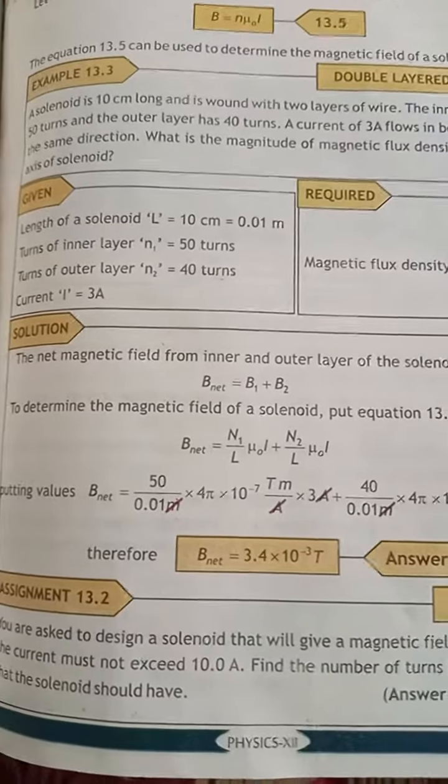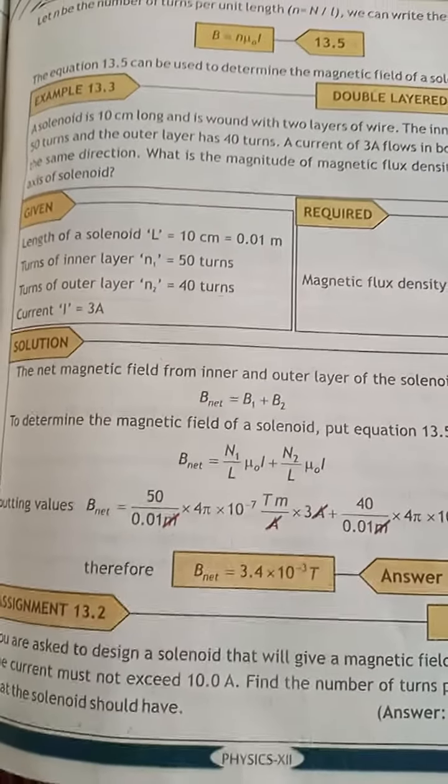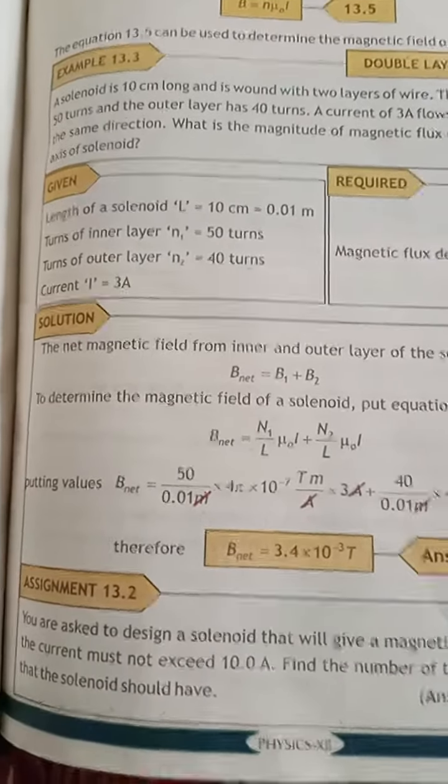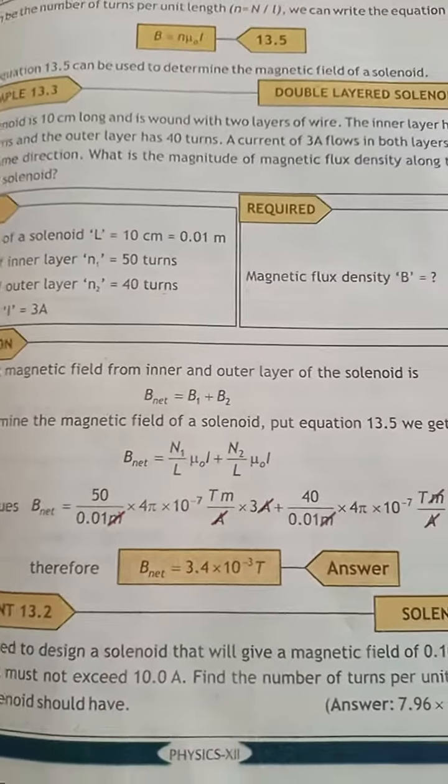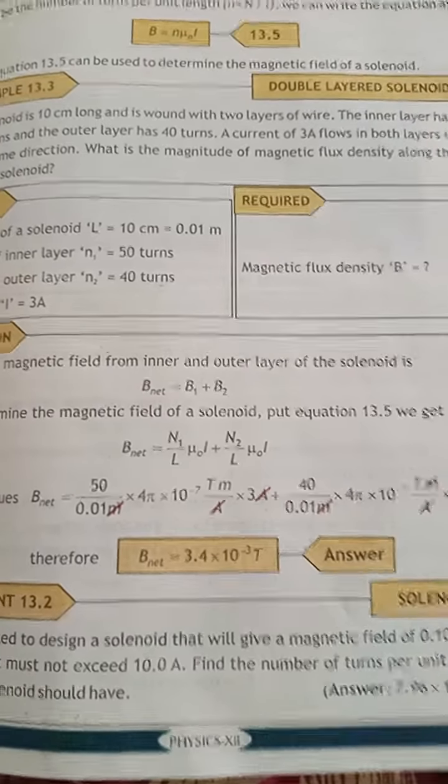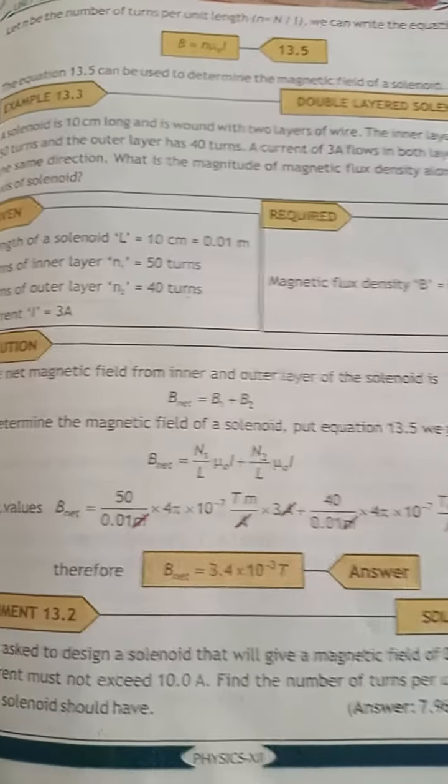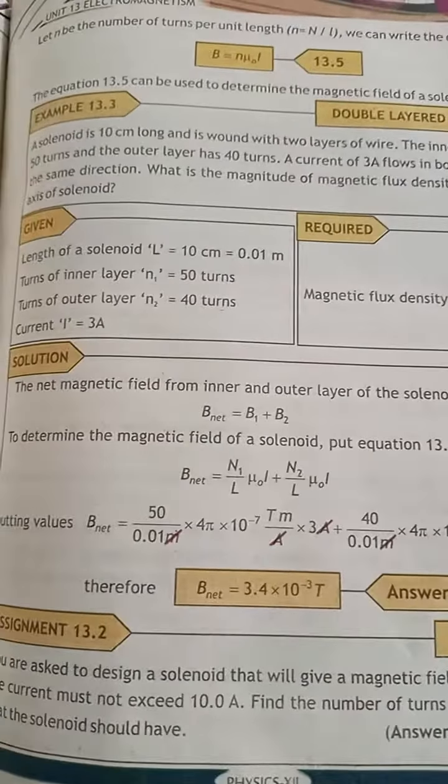The inner layer has 50 turns, i.e. N1 is 50 turns, and N2 is 40 turns. The current is 3 amperes in both layers in the same direction. What is the magnitude of magnetic flux density along the axis of solenoid?